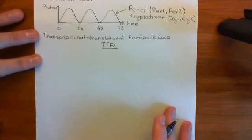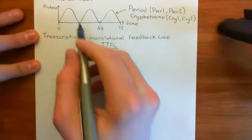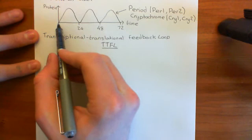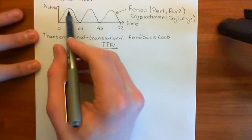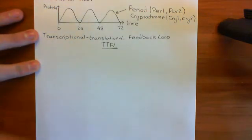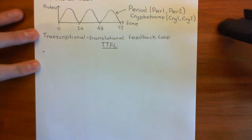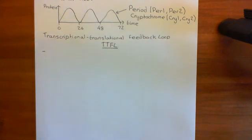Let's look at this transcriptional-translational feedback loop. It's a cycle, so there is no beginning, but we'll start at zero o'clock where you have very low period and very low cryptochrome proteins. To produce more, you need to activate the expression of the genes for these period and cryptochrome proteins, and to do that you need a transcription factor. The video will continue in the next video once a new pen is available.